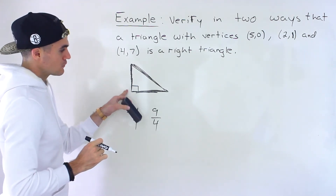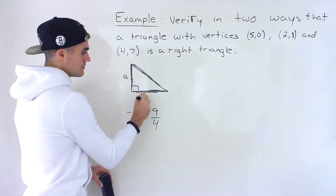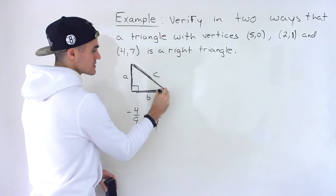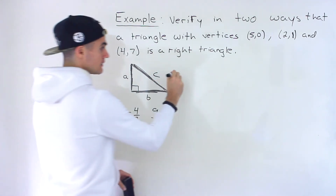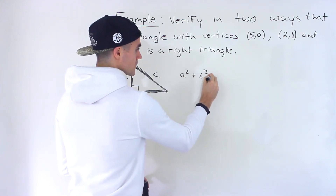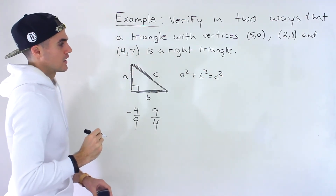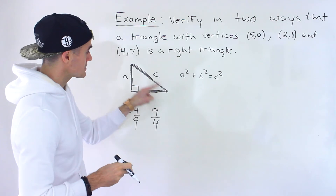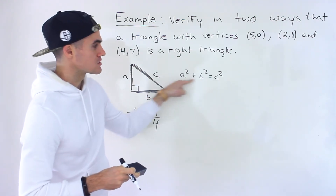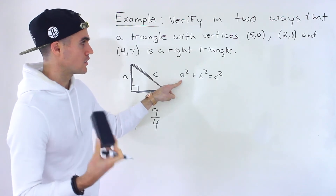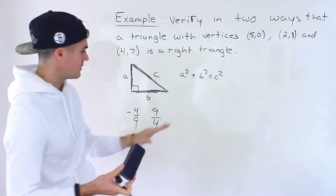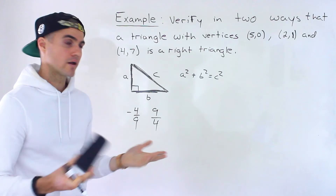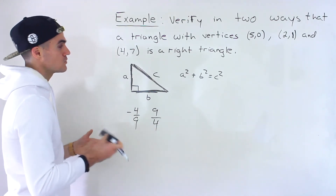Another way to do it: if we label the sides a, b, and c where c is the hypotenuse, then by the Pythagorean theorem, a squared plus b squared equals c squared. We can find the length of all three sides and verify that equation holds. It's a bit longer than the slope method, but it's a way you may be asked to do it. I'm going to show you both ways.